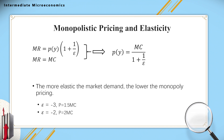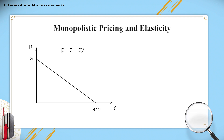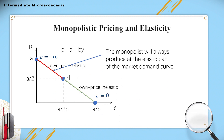When demand is more elastic, consumers are more sensitive to price changes, so the producer will lose more consumers when it raises price. But a lower price could attract more consumers and is more profitable. Second, recall that for a linear demand function, the price elasticity of demand is different at each point of the curve. We use the linear demand curve to show that the monopolist will always produce at the elastic part of the market demand curve — that is, when epsilon is smaller than minus 1. We can prove this statement by contradiction.